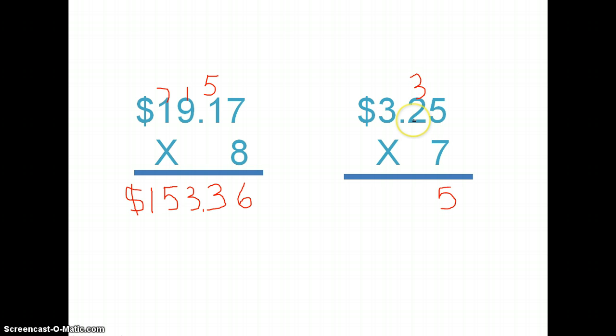Seven times two is fourteen, plus three is seventeen. Write down my seven, carry my one. And seven times three is twenty-one, plus one is twenty-two. So, I just write down my twenty-two.